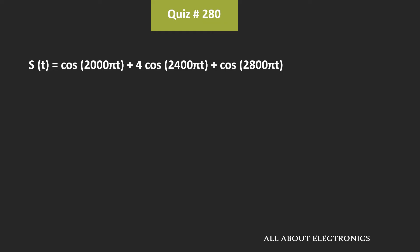Here, this is the modulated signal. And if you see this equation, it is not given in the standard format. The standard amplitude modulated signal can be given by this expression: AC plus M(T) times cos of ωC*T, where AC is the amplitude of the carrier signal while M(T) is the message signal.